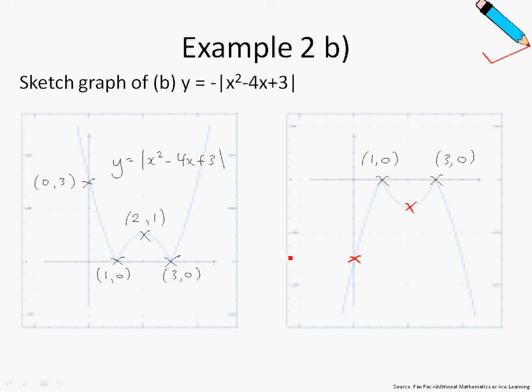Take note that the x-coordinate of the y-intercept remains the same. However, the y-coordinate has changed from 3 to negative 3. Why? Because the graph has undergone a reflection along the x-axis.